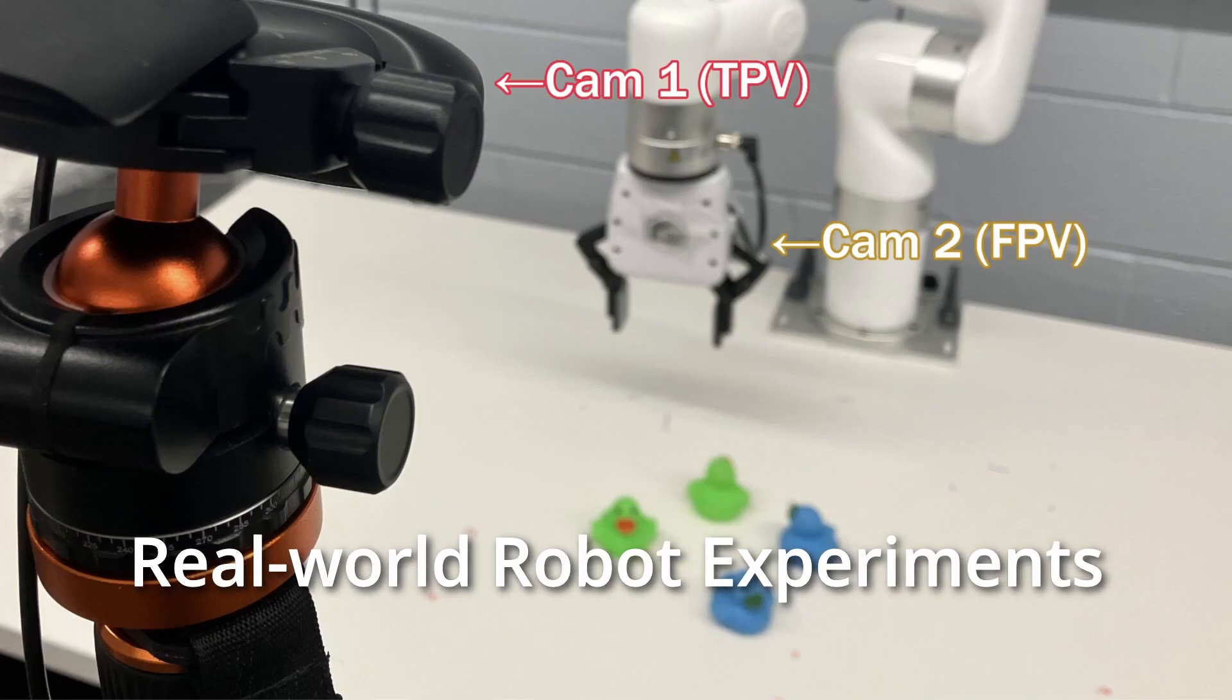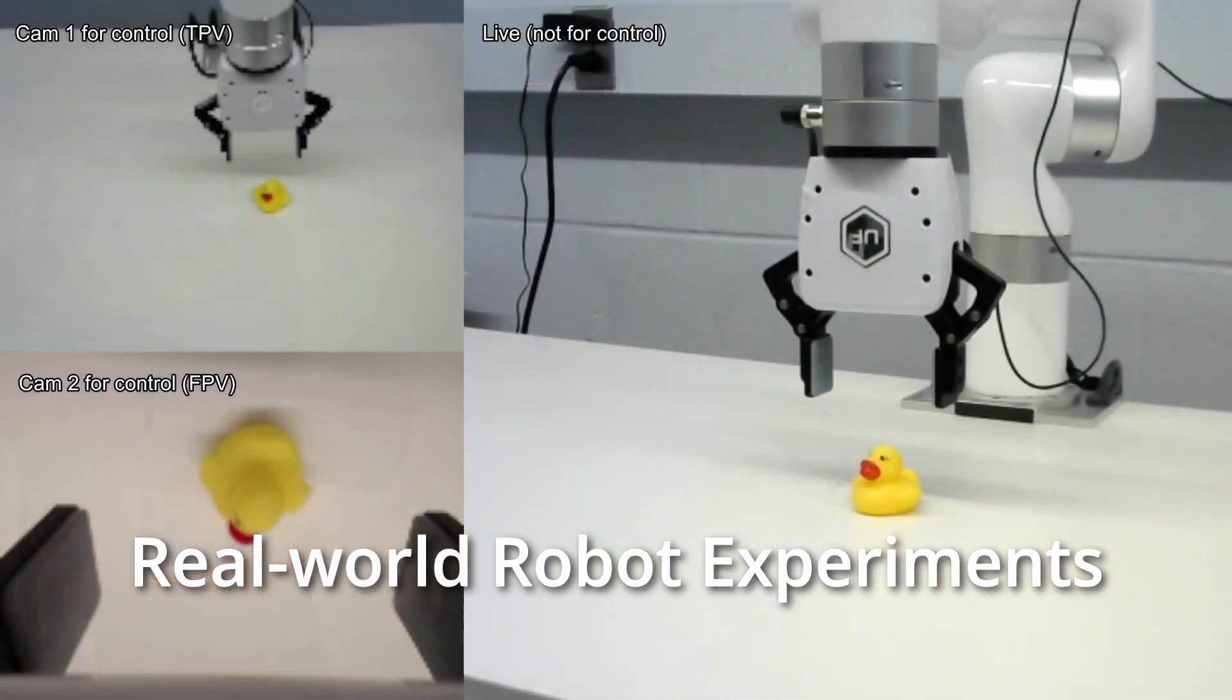Now we show some examples of real-world robot experiments. We use the images from these two cameras, as well as the 3D coordinates and the open-closed state of the gripper as the input states.